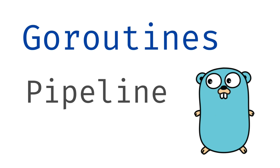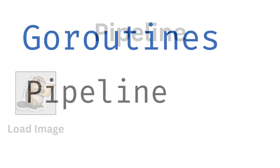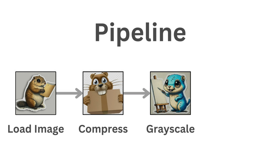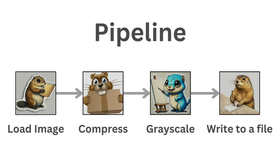In this episode we are going to build an image processing pipeline. This pipeline will have four stages: reading the file, reducing the size of the image, converting the image to grayscale, and finally writing the output to a file. These arrows between the stages represent the channels connecting goroutines.